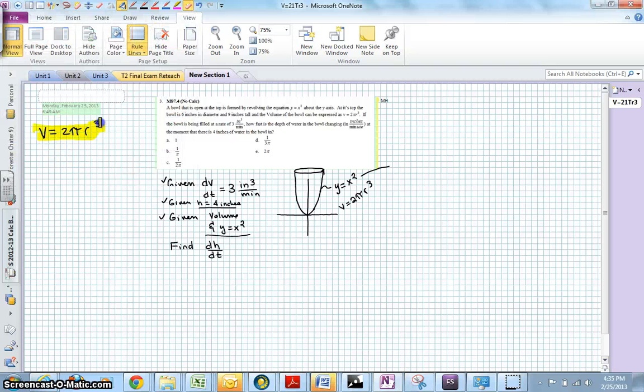In the given statement, we have a volume equation, dv dt is given, a height of 4 inches is given, an equation that relates the height and the radius is given, and a reminder that you are asked to find dh dt.